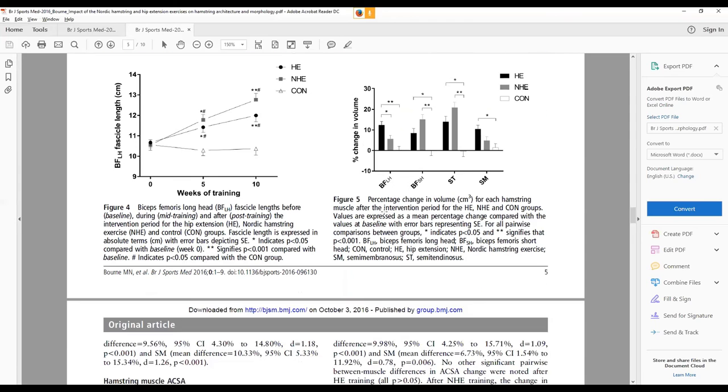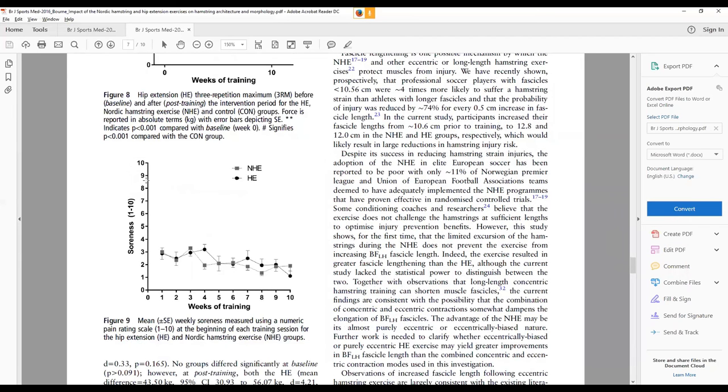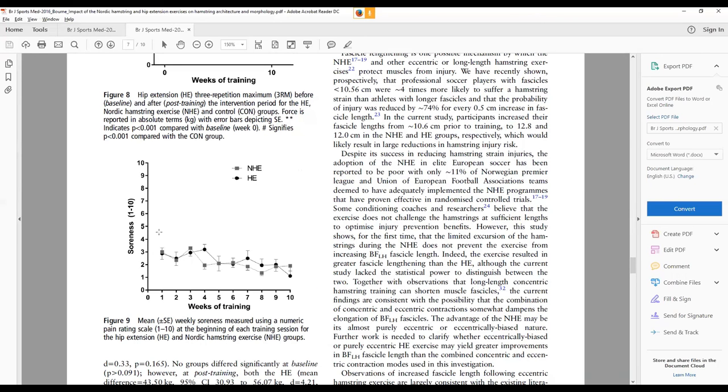In terms of soreness, this wasn't a key outcome variable. Here we've got soreness on the y-axis, weeks of training across the x-axis for each of our training groups. The key message I want to drive home is that neither training modality caused significant increases in soreness or pain. This is really in line with a lot of the other research that's been done, for example by Mjølsnes and colleagues and also Askling and Petersen, and the other Nordic hamstring RCT which reported that progressive increase in intensity and volume can be achieved while minimizing soreness across the intervention period.